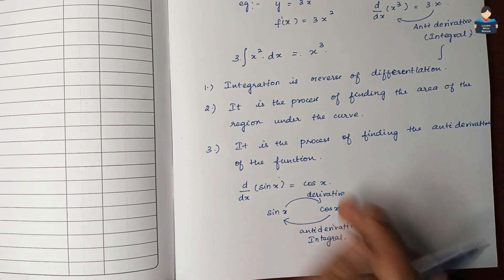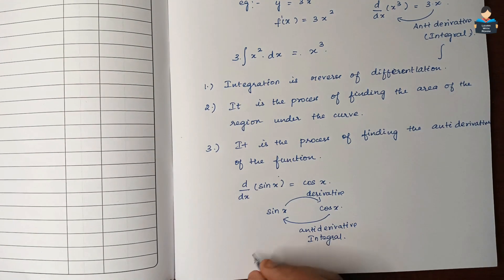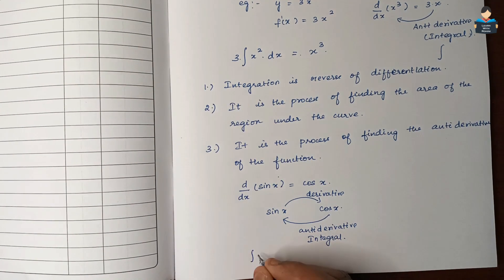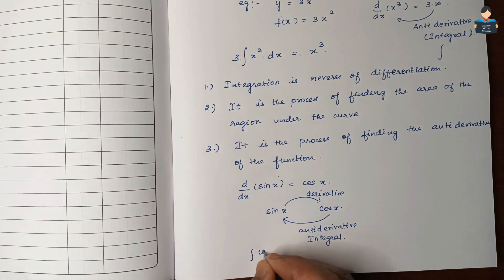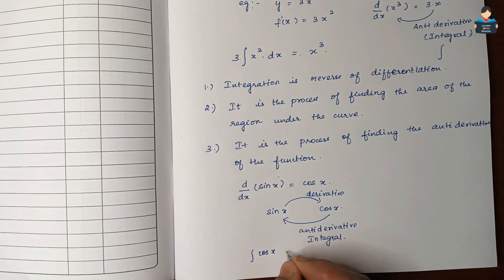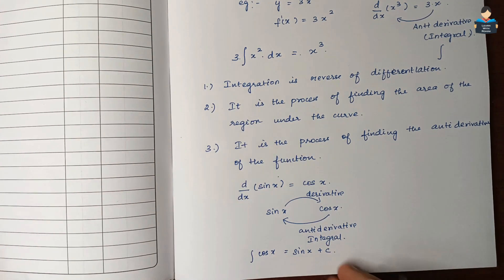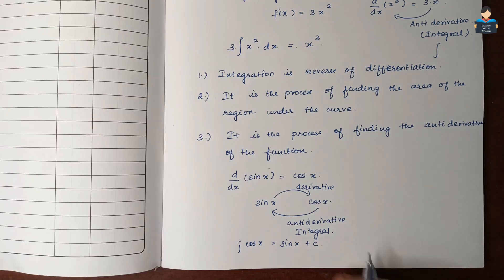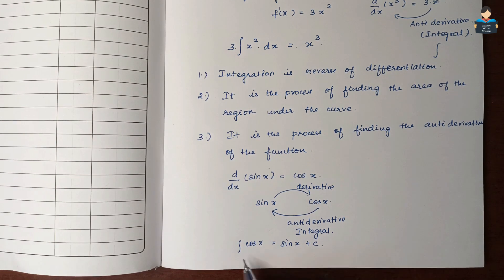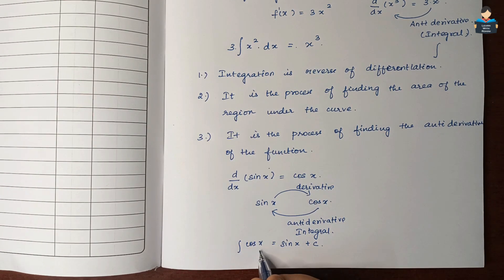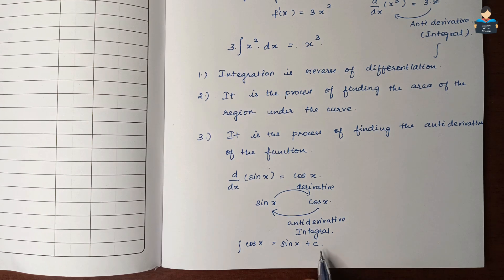Here we will differentiate. The integral of cos x is equal to sin x plus C. So we write sin x plus C. That is: the integral of cos x equals sin x plus C.